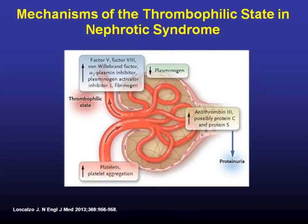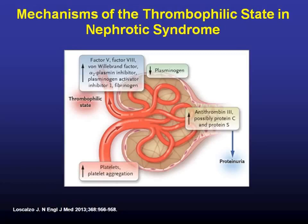Because they like to ask questions about the thrombophilic state associated with nephrotic syndrome, it's been hypothesized — and there are some studies to support — that there's an increase of factors that promote thrombosis and a decrease of factors that prevent thrombosis. Through proteinuria, you have loss of antithrombin-3 and possibly protein C and S, and there's also increased platelet aggregation.